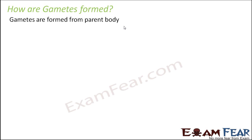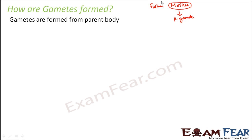If this is the father and this is the mother, the father has to give the male gamete and the mother has to give the female gamete. Only then will they both fuse. So the gametes are formed from the parent body — these are the parent bodies — and now there are two scenarios possible.